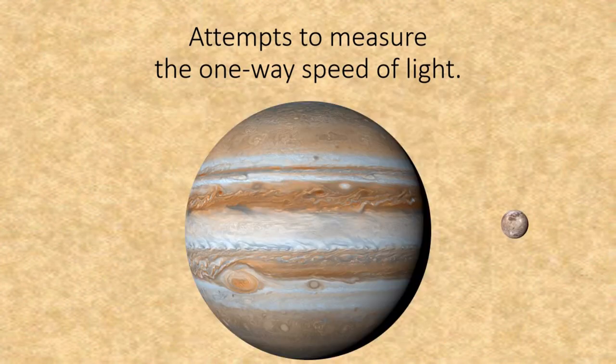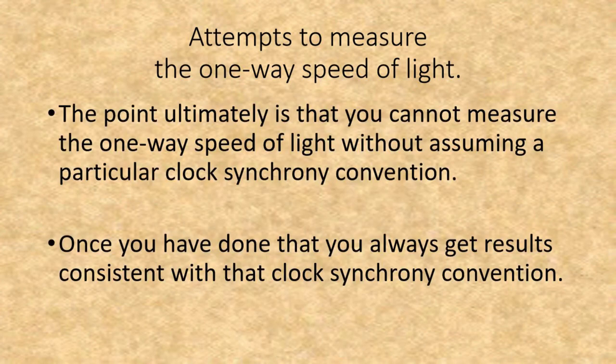You may ask: wasn't the one-way speed of light measured with the moons of Jupiter by Dutch astronomer Ole Rømer in 1676? Not really — that was the interpretation he made of his observations of eclipse time intervals, and it predated relativity while assuming an Isotropic Synchrony Convention. He did succeed in measuring the proper speed of light, because even in the Anisotropic Synchrony Convention the time dilation effect due to distance relates to the proper speed of light. However, it does not qualify as a measurement of the one-way speed of light independent of a clock synchrony convention. Ultimately, you cannot measure the one-way speed of light without assuming a particular clock synchrony convention, and you always get results consistent with that convention.